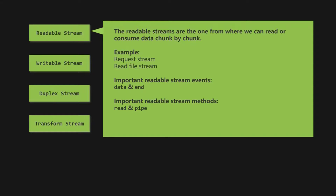Beside events, we also have important functions we can use on a stream. In the case of readable streams, the most important functions are pipe and read. The read function is called when we want to read each chunk from the readable stream one after the other. The pipe function allows us to plug streams together, passing data from one stream to another without worrying about events — for example, reading from a readable stream and writing to a writable stream simultaneously.